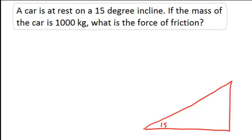We've got a car that is at rest — that means it's not moving — on a 15 degree hill. The mass of the car is 1,000 kilograms, and the question is asking what is the force of friction. A car that is at rest is going to have balanced forces; the net force is going to be equal to zero, meaning every force must be balanced out. The problem begins by drawing a free body diagram, and I've already started drawing one.